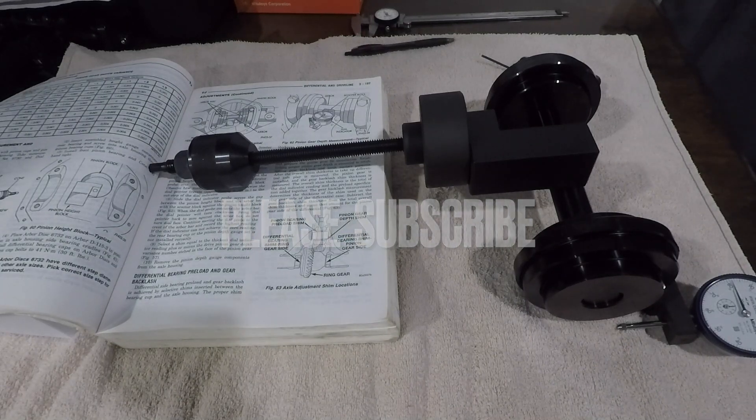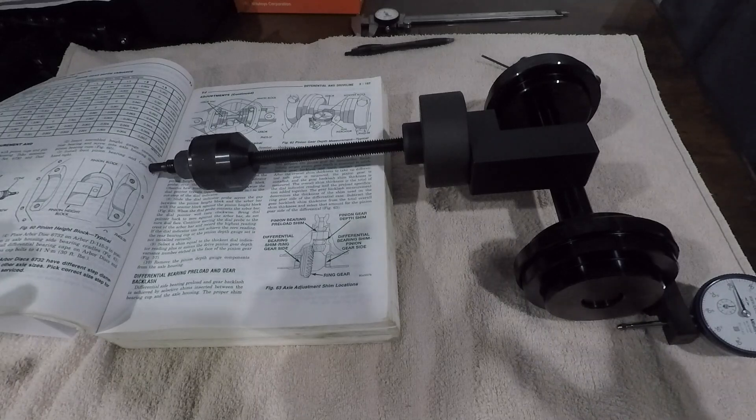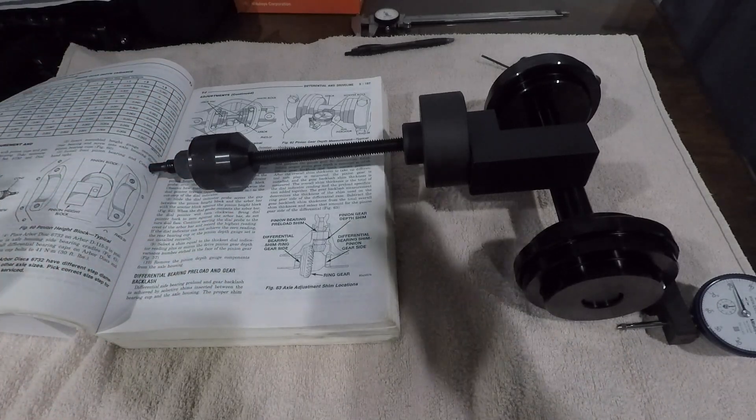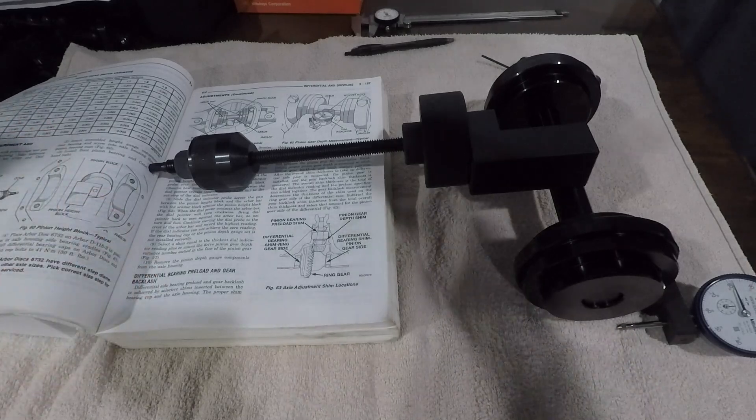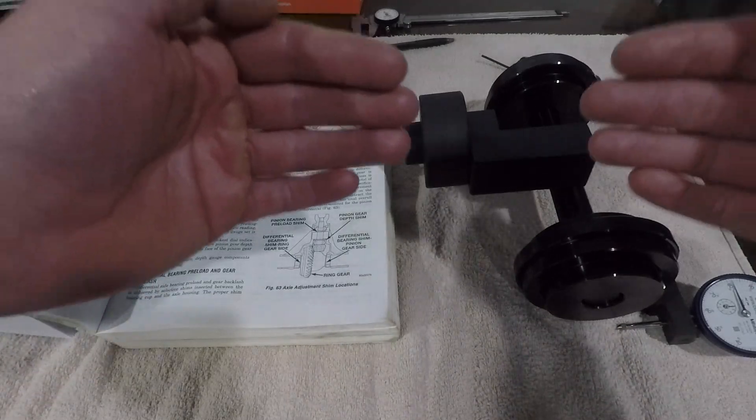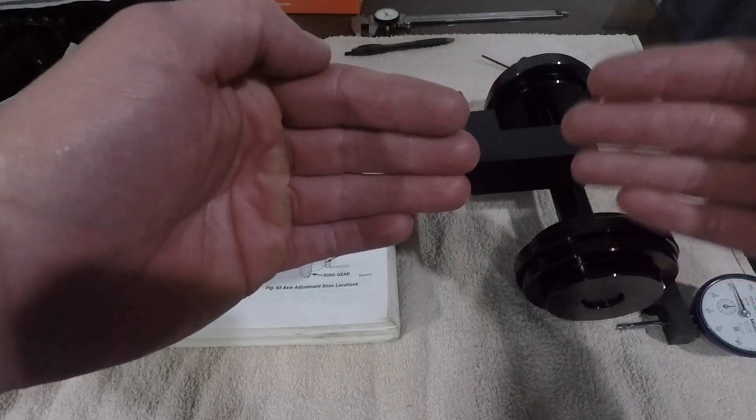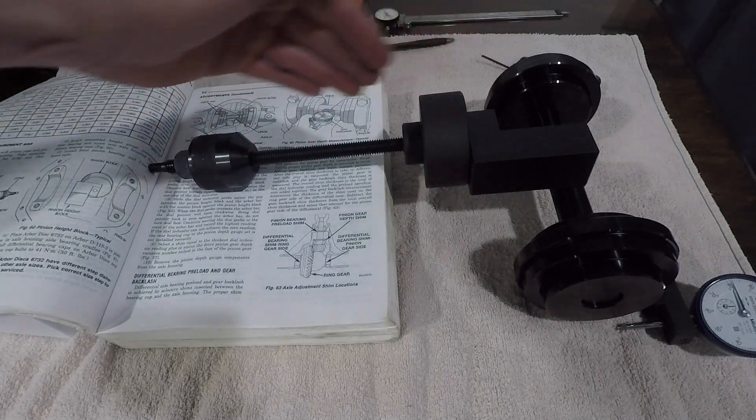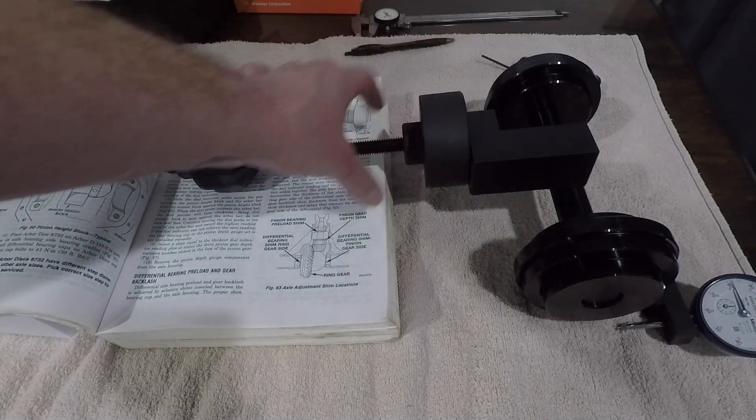This is a pinion depth tool and what this tool does is if you have a housing, a bare housing, you have no idea where to start with pinion shims. This simulates the absolute most perfect pinion gear tooth to ring gear pattern, the perfect center line. This is simulating the pinion gear itself.